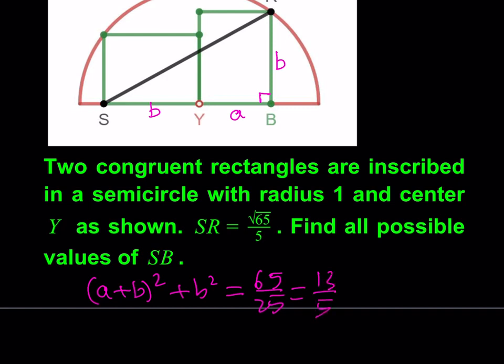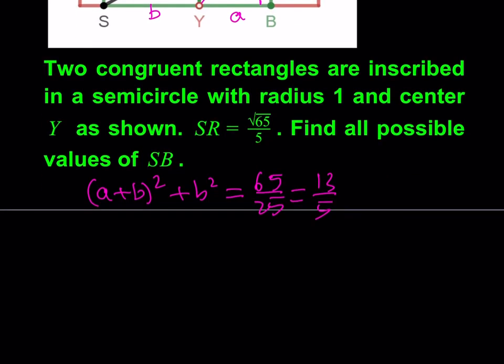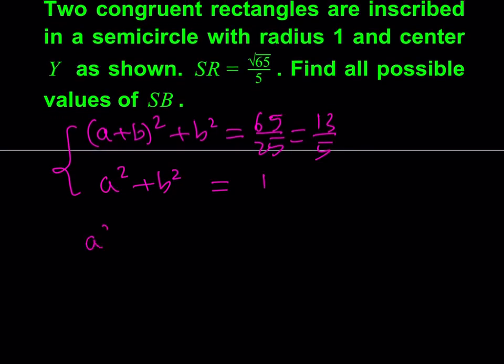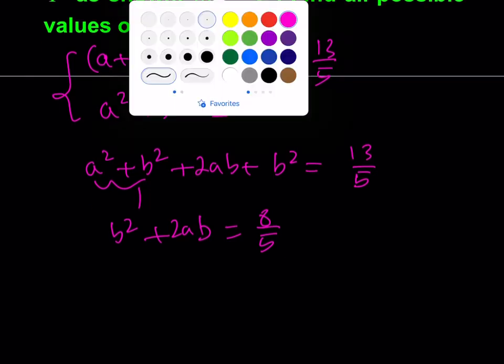And then I do have another relationship which comes from this triangle here, because that's the radius of the semicircle. So I'll be getting A squared plus B squared equals 1. So if I put these two equations together, let me expand the first one. I should be getting A squared plus B squared plus 2AB plus B squared equals 13 over 5. Now I know that this is equal to 1, I'm going to go ahead and subtract that from the 13 over 5 which is going to give me 8 over 5.